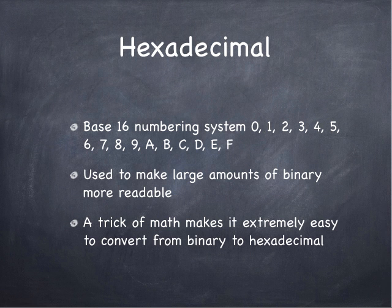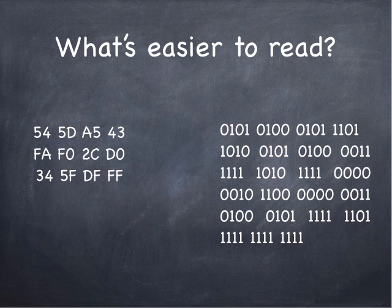It's used to make large amounts of binary more readable, because once you get the trick of it, once you get the knack, it's actually very easy to convert between hexadecimal and binary. So take a look at this. What's easier to read? The information on the right in binary or the information on the left? Hexadecimal, obviously. The information on the left is easier to read because it has more variation in the symbology. There's more symbols to look at, so it's easier to make sense of. And that's why we use it.